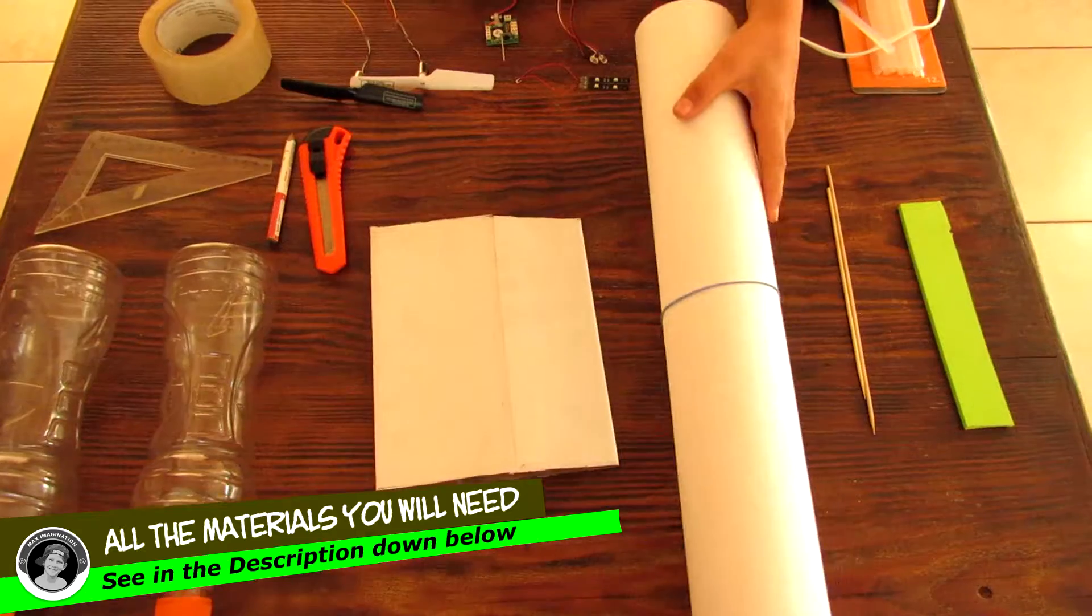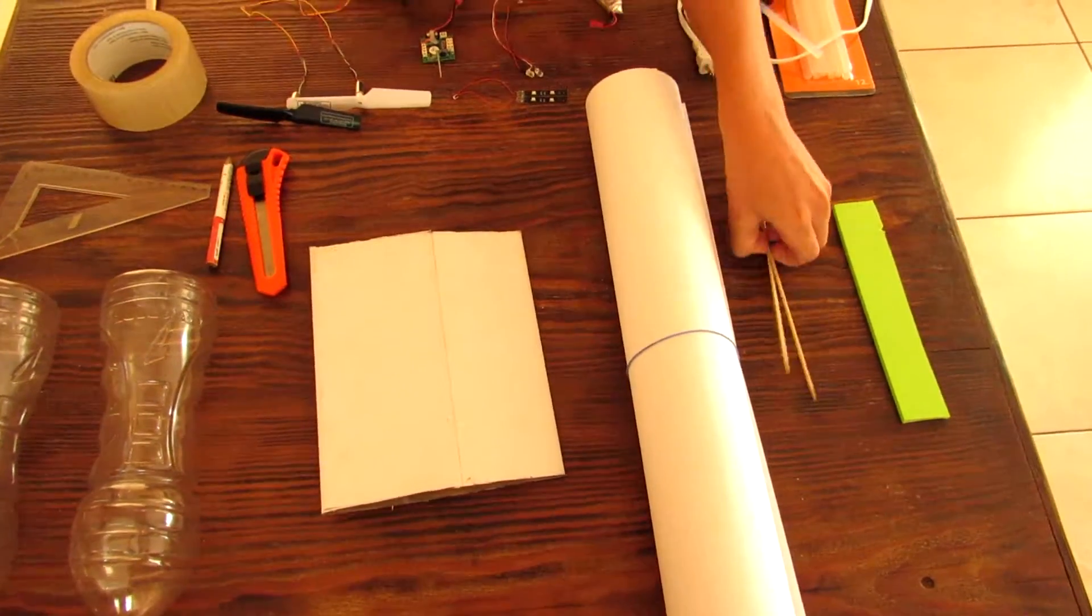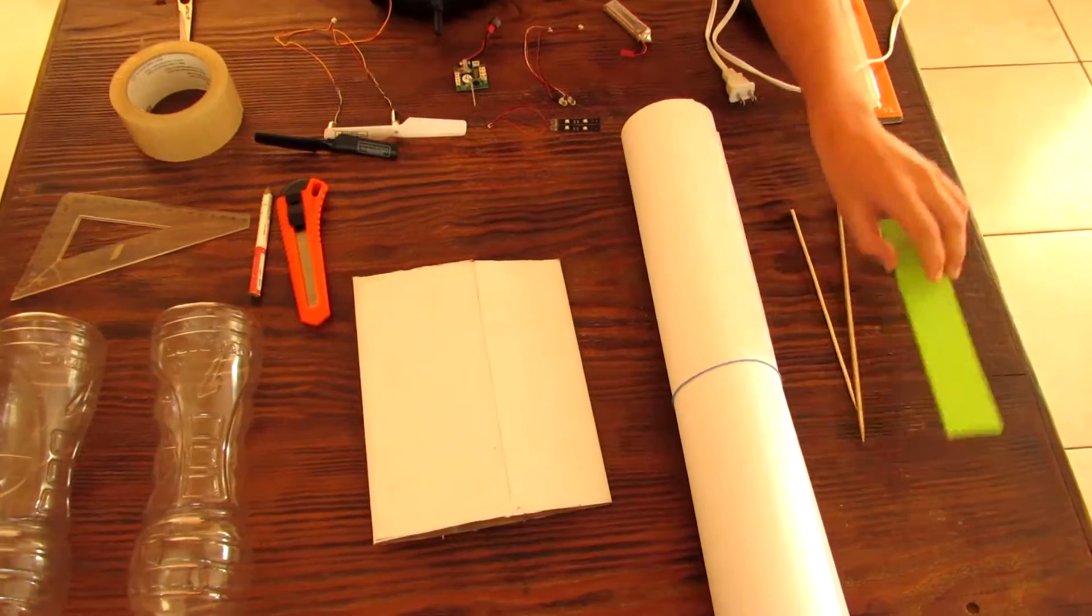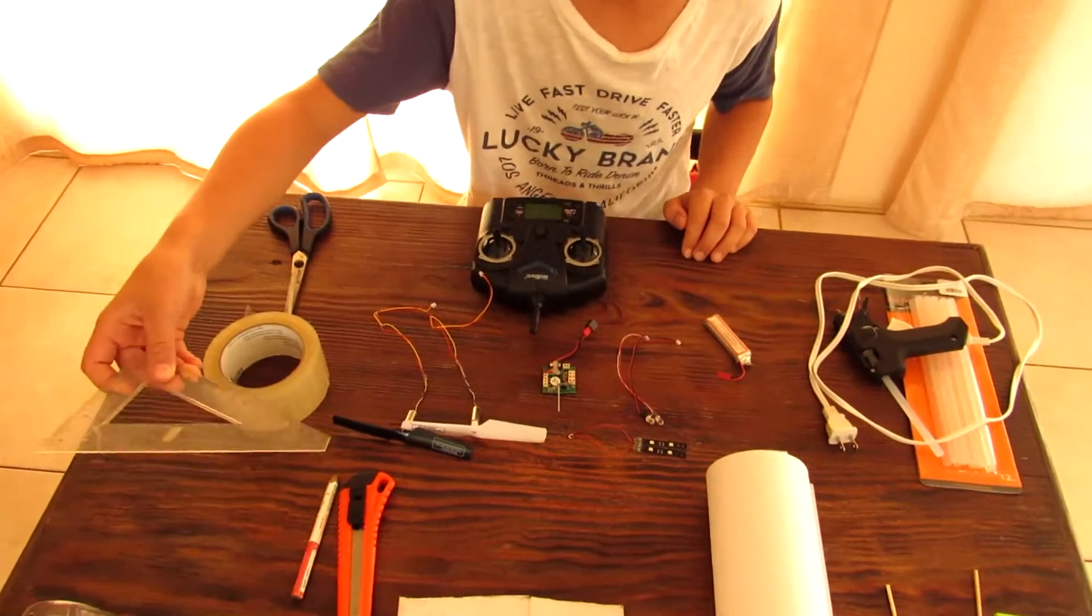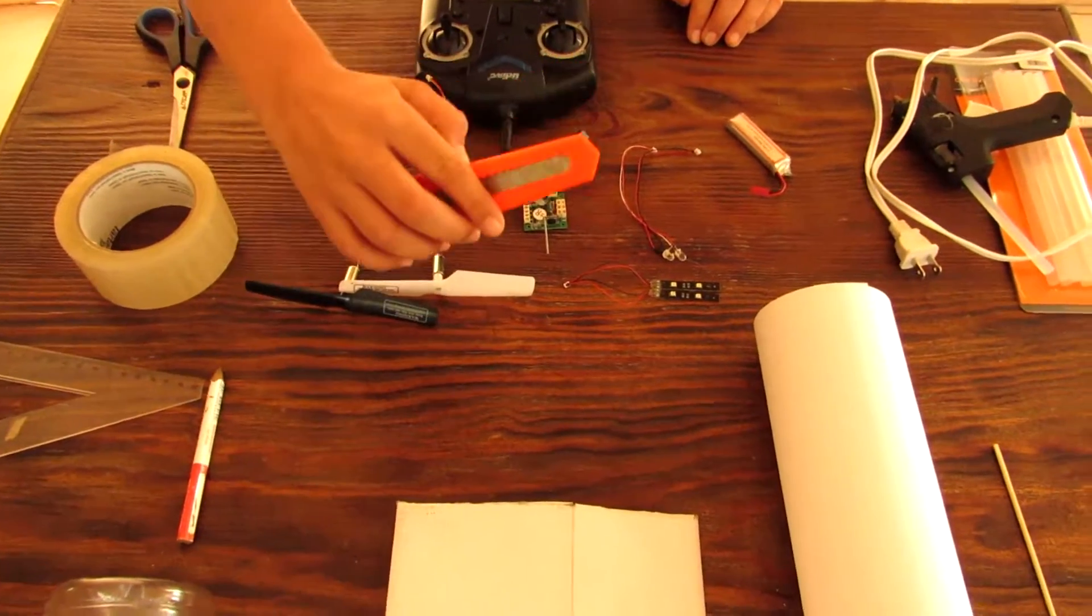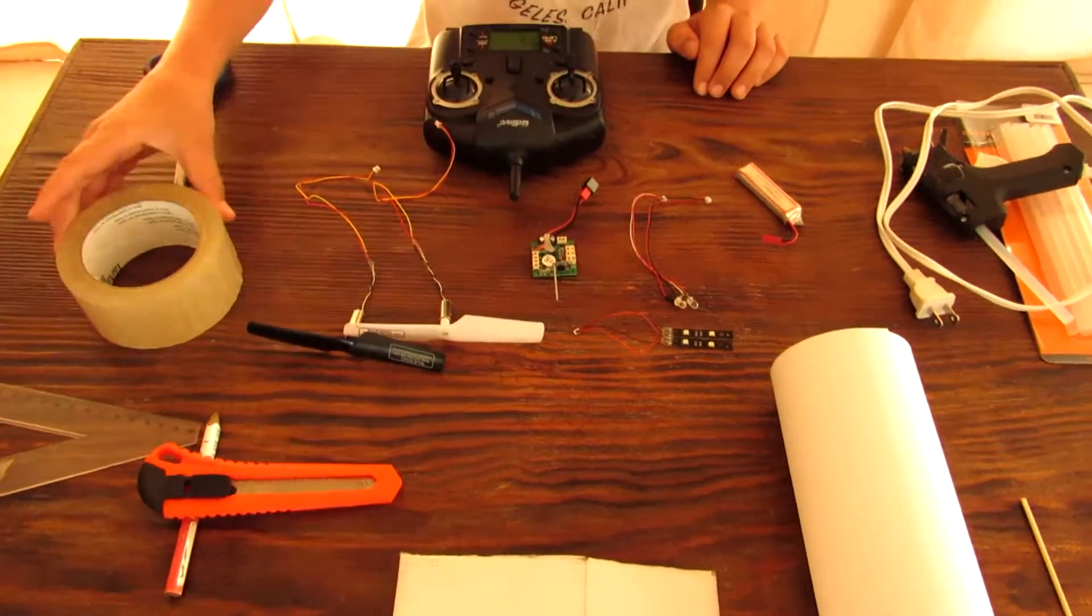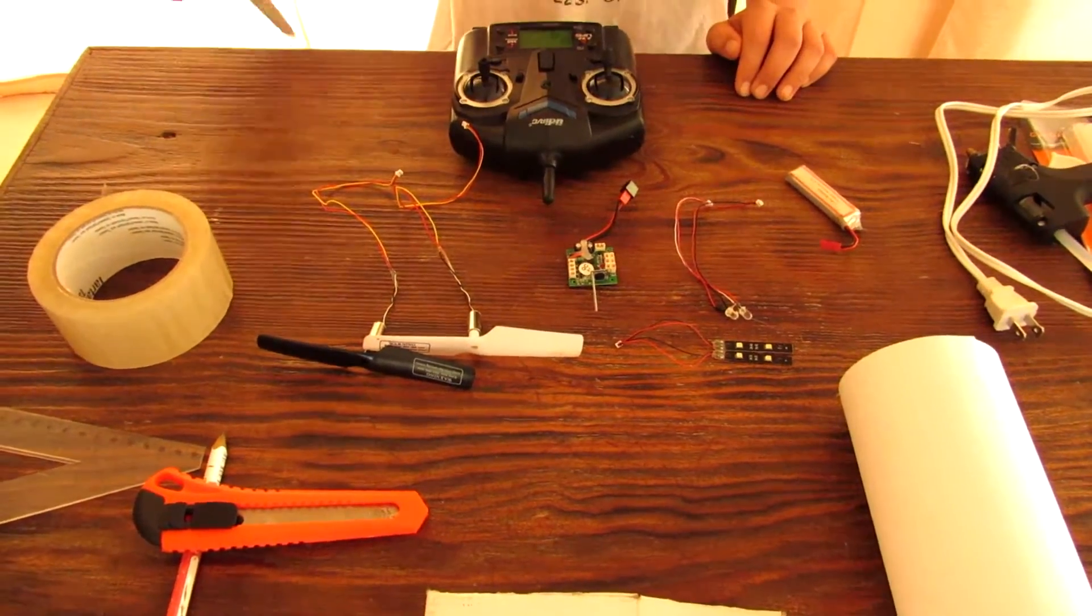And then some construction paper for our sails of the boat and a couple of skewers, a piece of foam. Then you'll need a ruler, a pencil, a sharp knife. Moving on, we have a roll of tape, clear tape, some scissors.